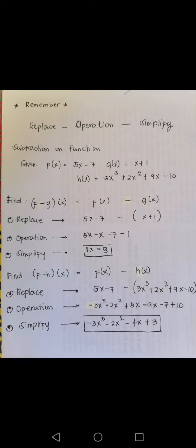As you can see on the operation, you will do both addition and subtraction. Remember, if there are no like terms, then you have to copy that. For the simplified answer, that becomes -3x³ - 2x² - 4x + 3.